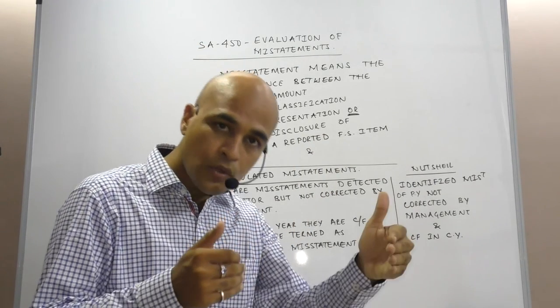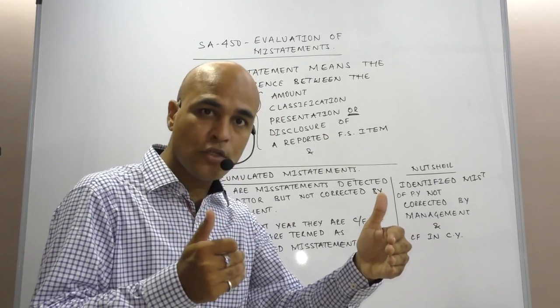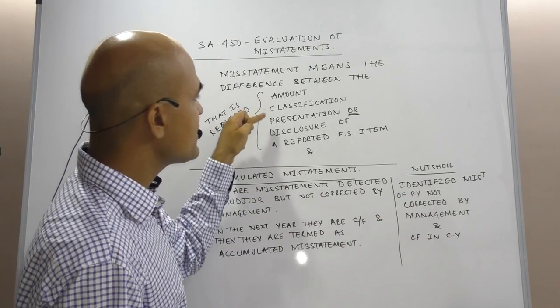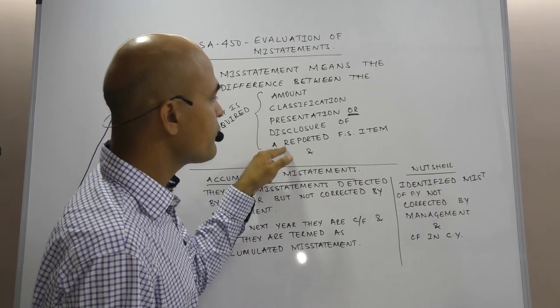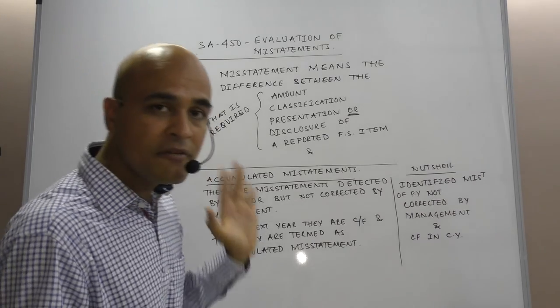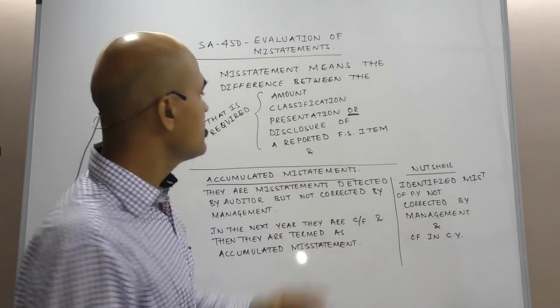What is reported is not actually what is required. There is a difference between amount, classification, presentation and disclosure of a reported item and what is required is something different, then we term it as misstatement.